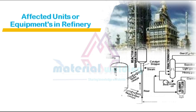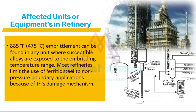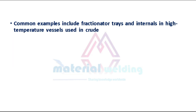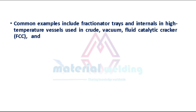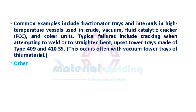885 degrees Fahrenheit embrittlement can be found in any unit where susceptible alloys are exposed to the embrittling temperature range. Most refineries limit the use of ferritic steel to non-pressure boundary applications because of this damage mechanism. Common examples include fractionator trays and internals in high-temperature vessels used in crude, vacuum, fluid catalytic cracker (FCC), and coker units. Typical failures include cracking when attempting to weld or to straighten bent or upset tower trays made of type 409 and 410 SS.